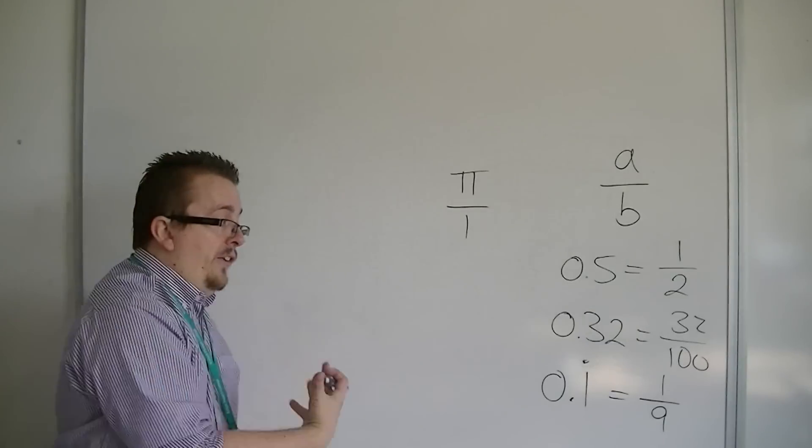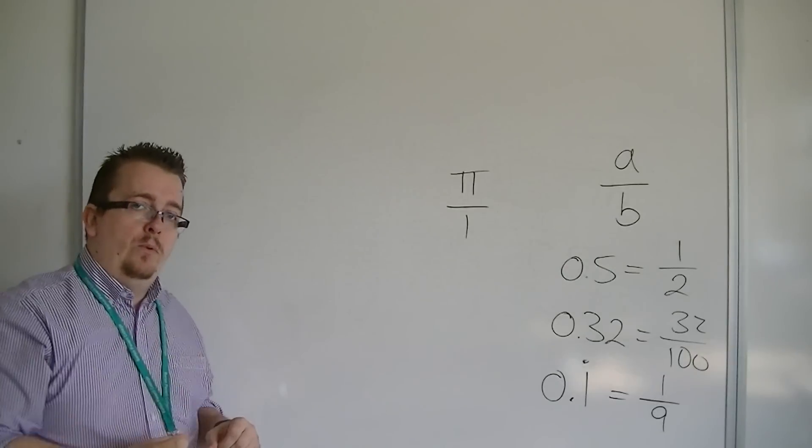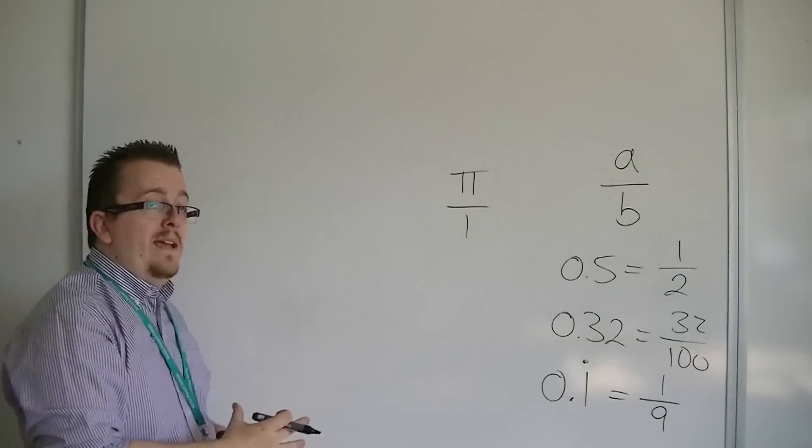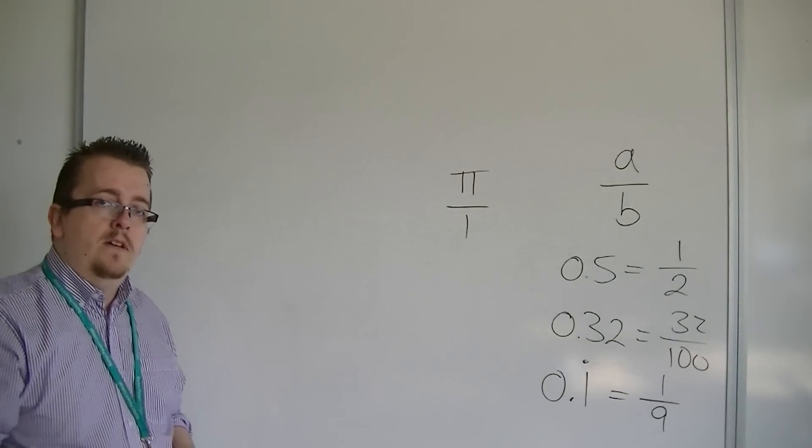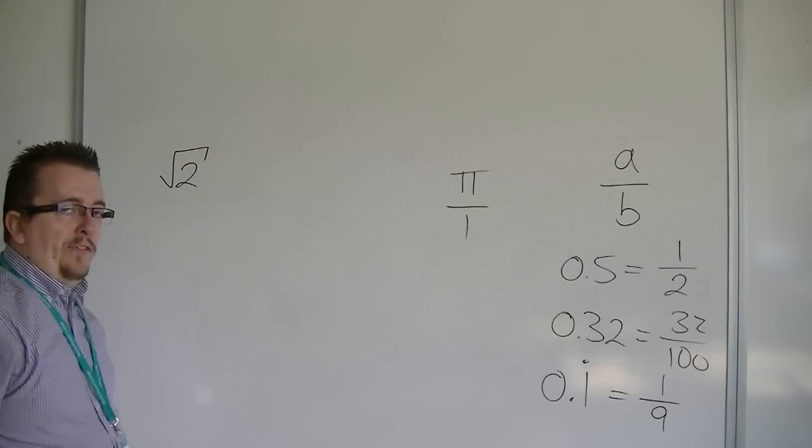Pi doesn't terminate, and there are no repetitions in its number sequence. And so that's what makes it this irrational number. Another example is root 2, and this is where the surds come in.